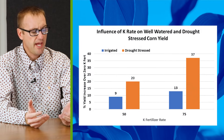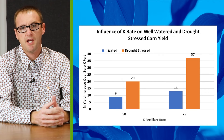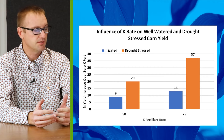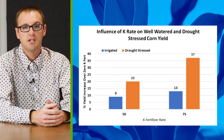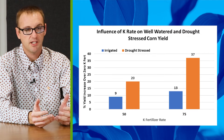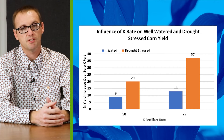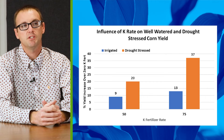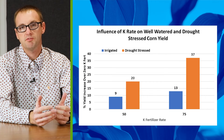I want to briefly mention the findings of a study published in 2020. The soil test levels in these experiments were about 121 parts per million — very low to low. This is the average of 10 hybrids, all of which showed a very similar effect. They had a 50-pound-per-acre treatment and a 75-pound-per-acre treatment. In well-watered, irrigated situations, there was roughly a 9% to 13% yield increase over no K fertilizer. But in drought conditions, there was a 20% and 37% yield increase from fertilizing with potassium.